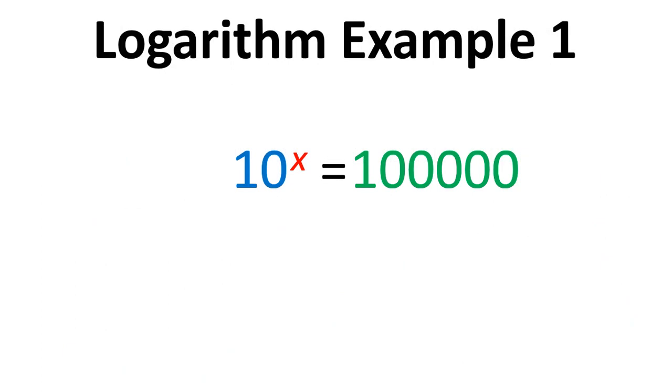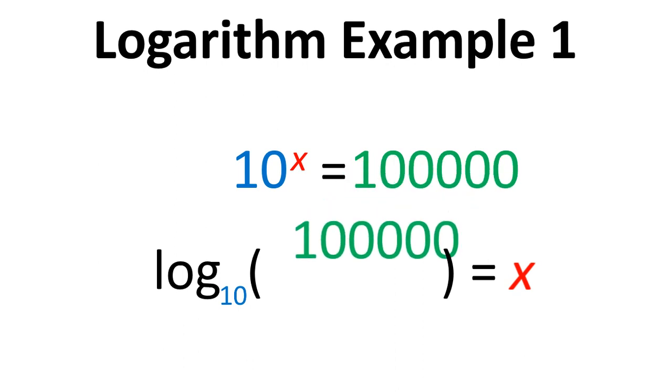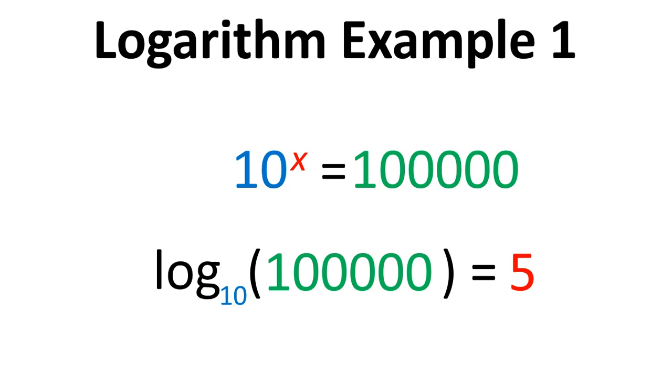Okay, so let's take an example, 10 to the x equals 100,000, so the 10 goes down here because that's the base, the x goes over there because that is what we're solving for, and then the 100,000 goes there, and the answer is 5.